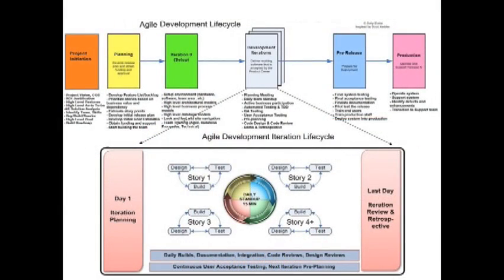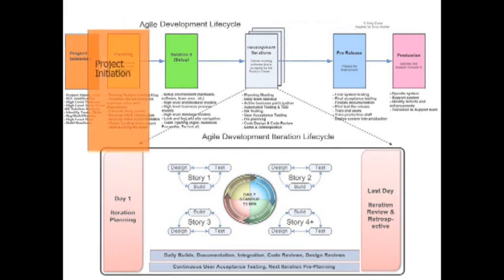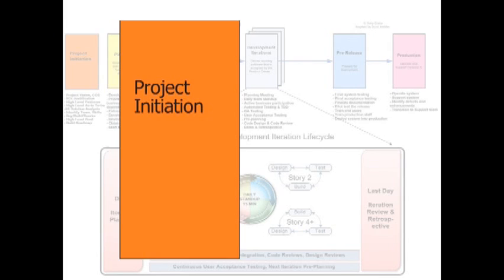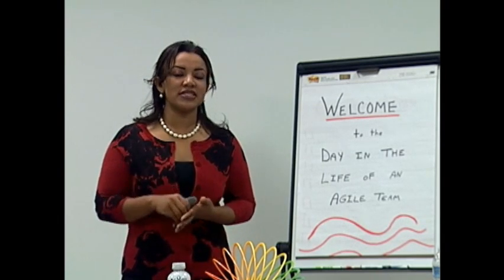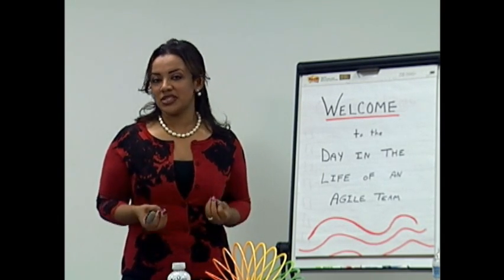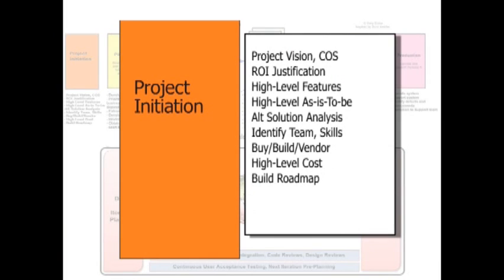The first step of the agile lifecycle — or quite frankly any traditional project lifecycle — is initiation. Some people also call it feasibility. This is where you're trying to find out: is this idea even qualified? Should we even do it? Does it return business value? You go through initiation steps such as identifying ROI justification, coming up with the high-level vision, identifying the as-is and the to-be, alternative solution analysis, what solution should we do — should we go with a buy or build? Maybe even identifying initial upfront cost, who you want as part of the team, what resources do you need on the project, and possibly even coming up with a high-level roadmap.